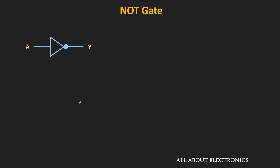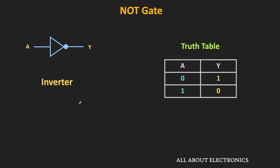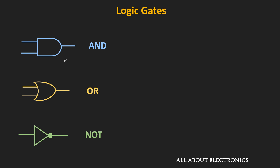The next gate is the NOT gate, also known as the inverter gate, because in this gate the output is the complement of the input signal. If the input is high, the output will be low, and if the input is low, the output will be high. This is the truth table of the NOT gate — it inverts logic 0 to logic 1 and logic 1 to logic 0, and it is very useful in implementing different Boolean functions. The AND, OR, and NOT gate are the three basic gates using which it is possible to design any logic circuit or implement any Boolean function.